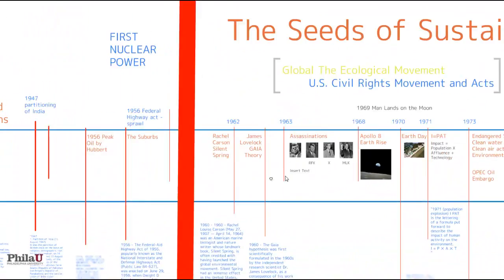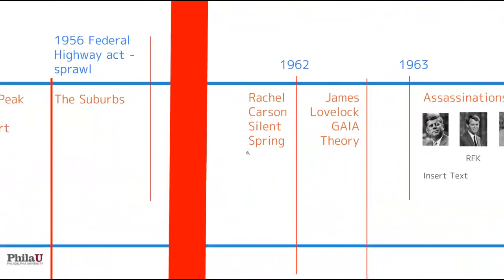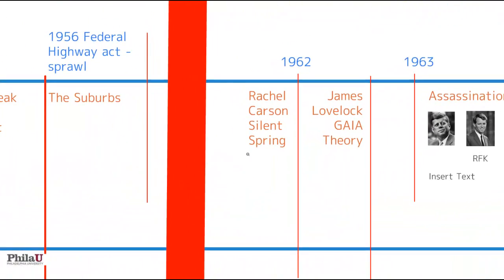We start off with Rachel Carson's Silent Spring. Almost every student who studies environmentalism and sustainability will have become familiar with Rachel Carson and her book, because she began to unveil the complexities of ecosystems and how the use of chemicals can create imbalances in ecosystems where species are threatened. In this case, it was the use of DDT as a pesticide on crops. Silent Spring was one of the first salvos in really changing the way that humanity would think of itself in relationship to nature.